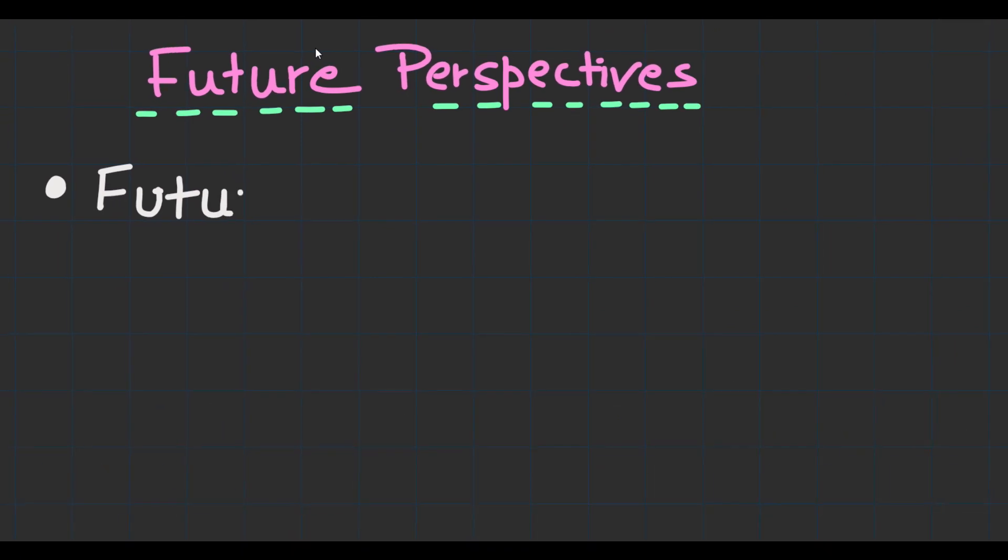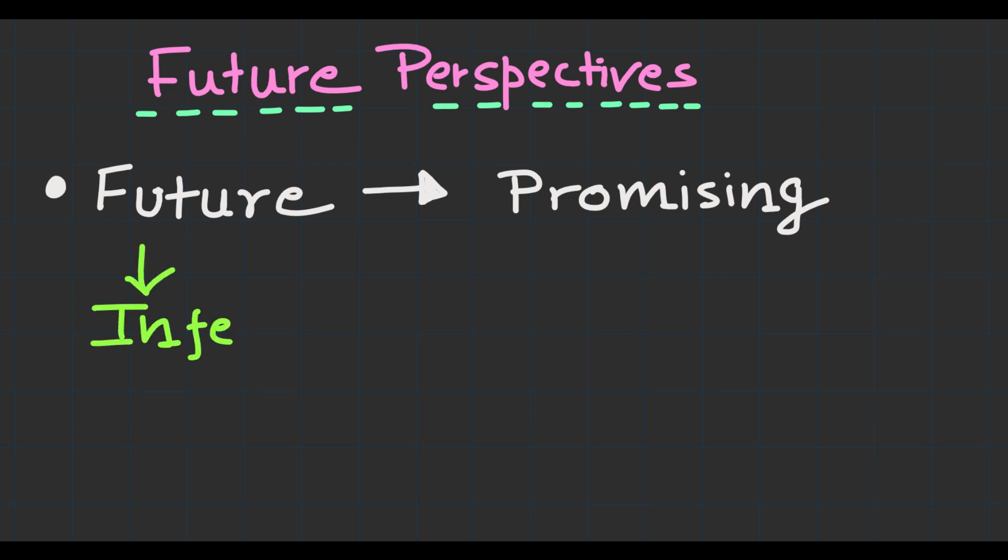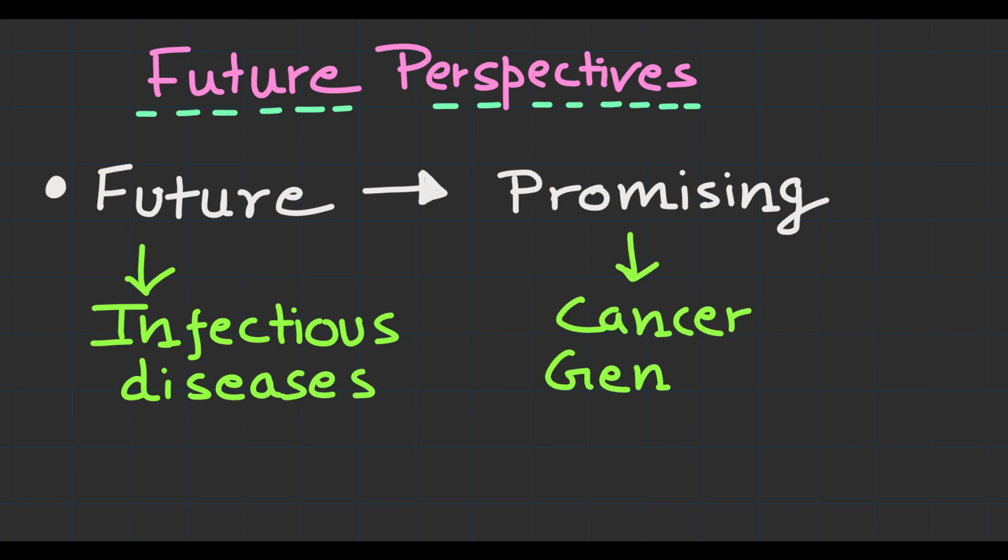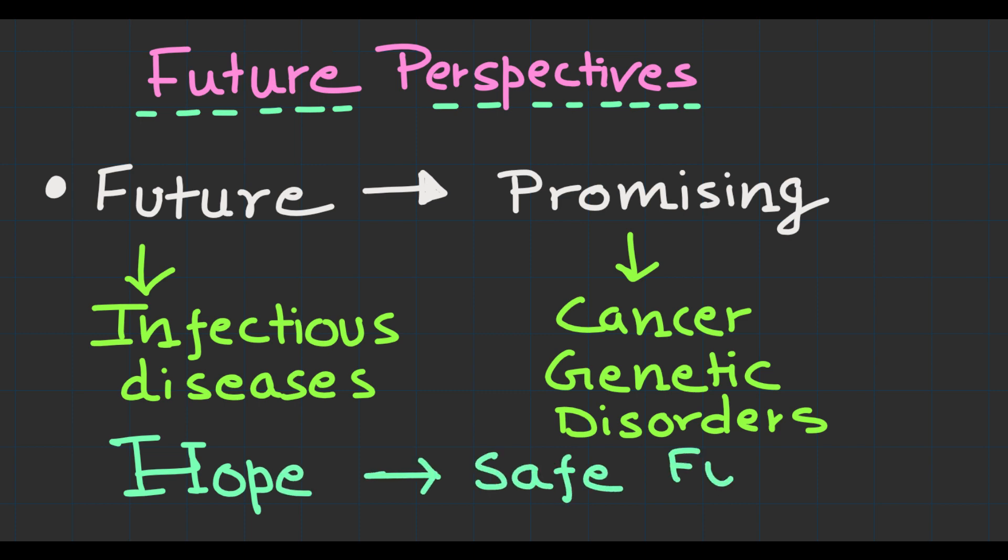Now moving to the future prospects. The future of mRNA vaccines is promising. Ongoing research aims to expand their application to a wide range of infectious diseases and potentially address other health conditions such as cancer and genetic disorders. The development and utilization of mRNA vaccines mark a significant milestone in modern medicine, offering hope for a healthier and safer future.